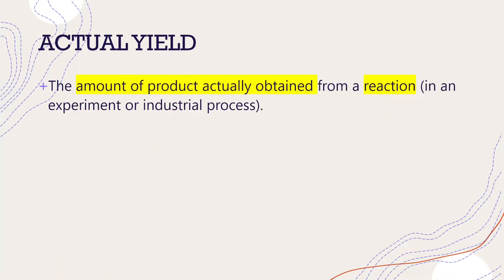Actual yield is the amount of product you actually obtain. For example, in combustion, you combust carbon and it becomes CO2. Theoretically, you get an idea of how much it will produce, but in an actual experiment or industrial process, you actually get less than that. Why? Because some carbon might be exposed to the air or might stick to the wall of the beaker when you are weighing it. So in the end, your actual yield is usually lower than your theoretical yield.